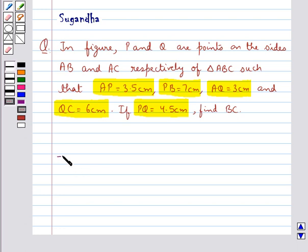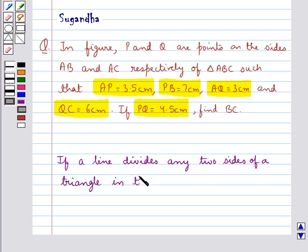We know that if a line divides any two sides of a triangle in the same ratio, then the line is parallel to the third side.